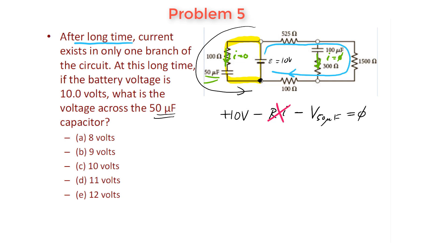That has to be equal to zero. So at the end, this is a very simple problem. The voltage across the 50 microfarad capacitor is simply going to be equal to the voltage of the battery in this case, which is 10 volts. So the correct answer for this one has to be choice C.